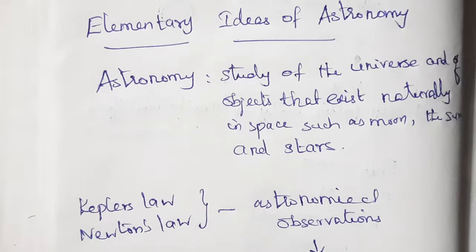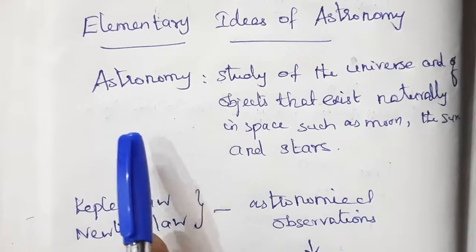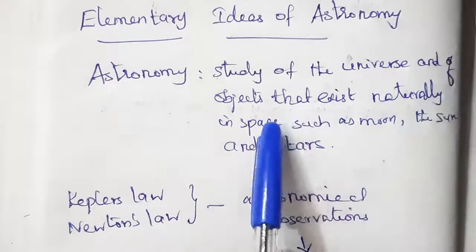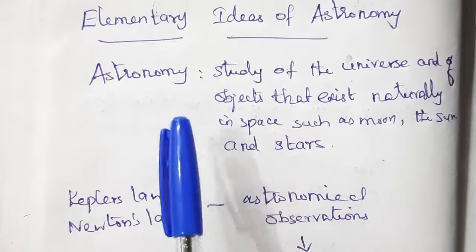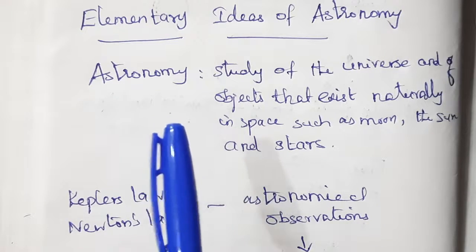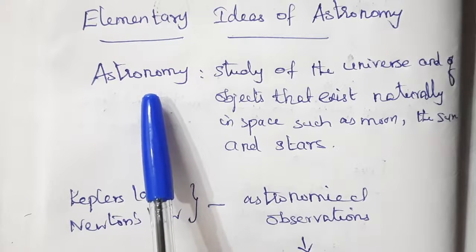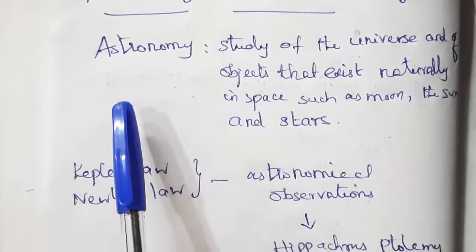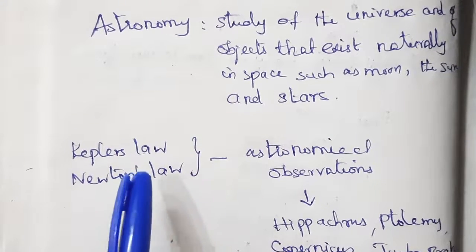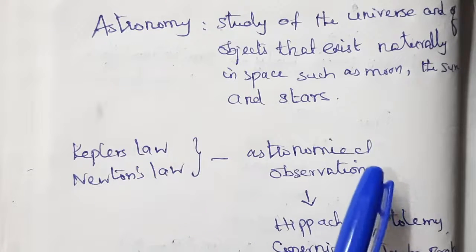Let's move on to the next topic: elementary ideas of astronomy. This is the last chapter in this unit. Astronomy is the study of the universe and objects that exist naturally in space, such as the moon, the sun, and stars — the study of heavenly bodies. Astronomy is an important branch closely related to physical science and has contributed a lot to physical science.